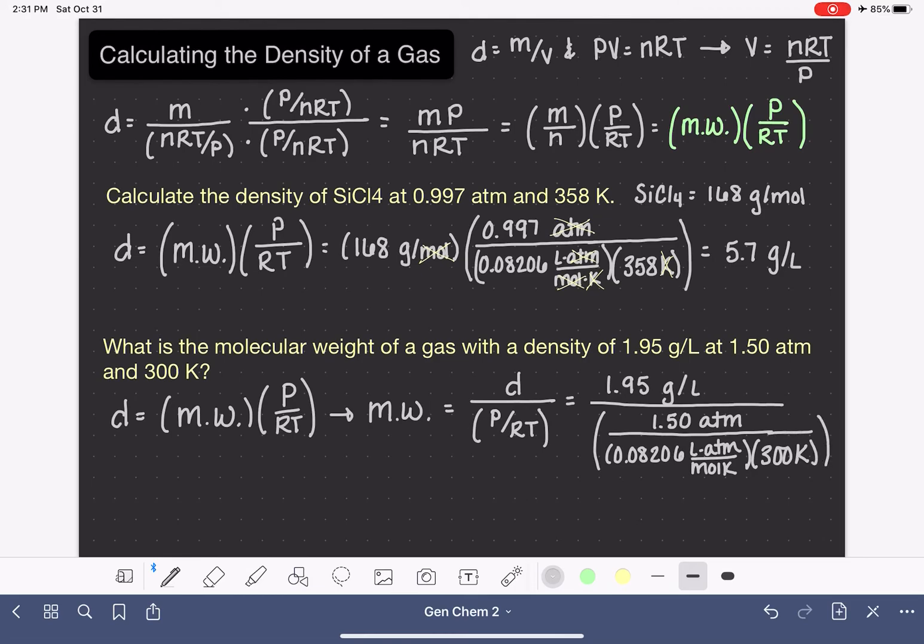So before we put these numbers into our calculator, let's just double check to make sure that our units are going to cancel the way we want them to. We have the atmosphere unit canceling. We have the liters canceling. We have Kelvin canceling. We'll end up with units of grams per mole, which is appropriate for molecular weight.